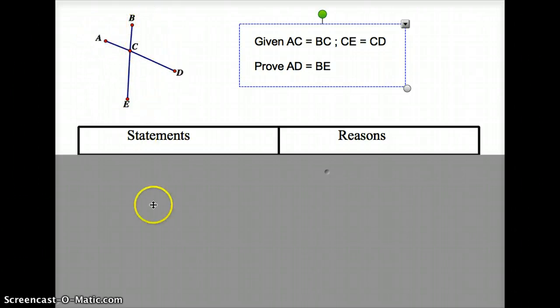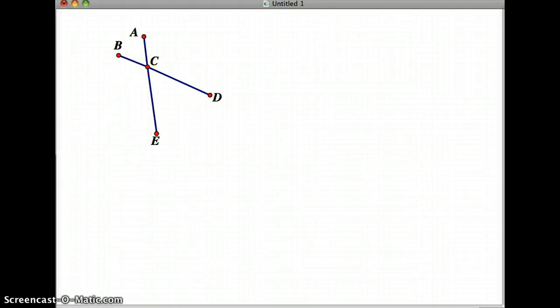So let's mark up the diagram. I'm going to do it first in Geometer's Sketchpad. So we're given that BC equals AC and also that CE is equal to CD. So now if we look at this...